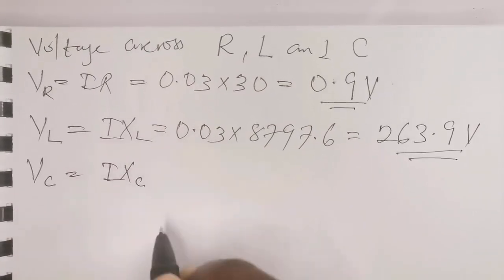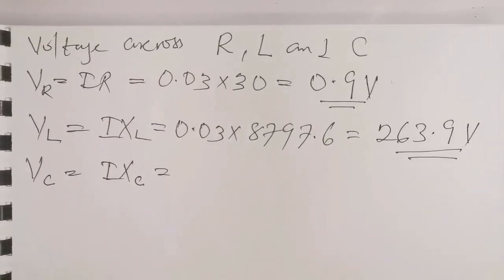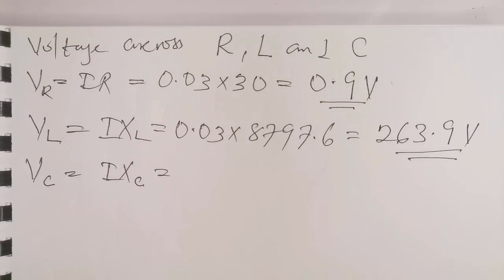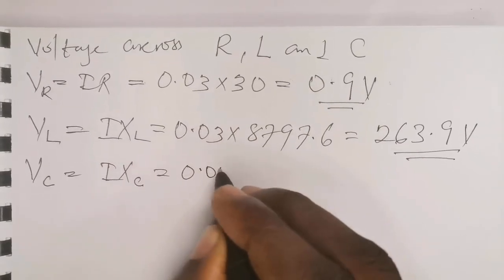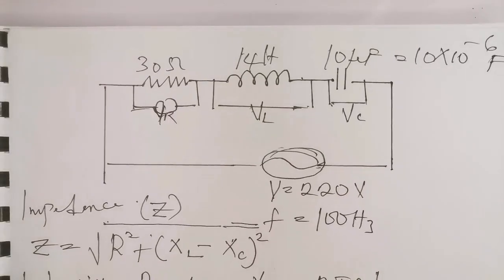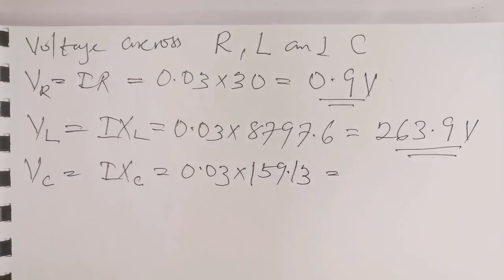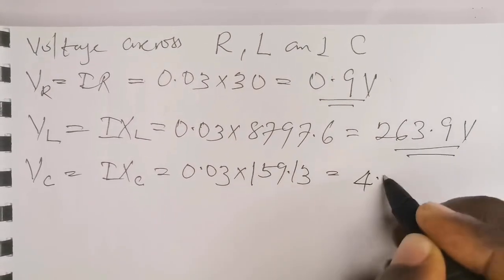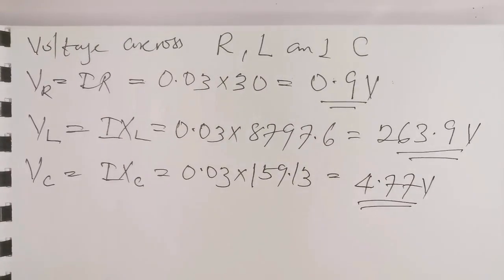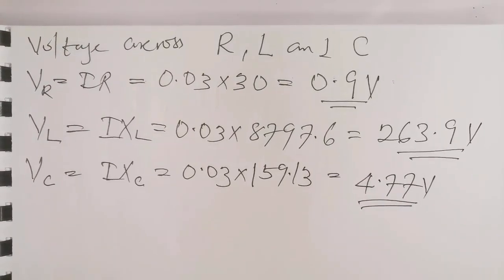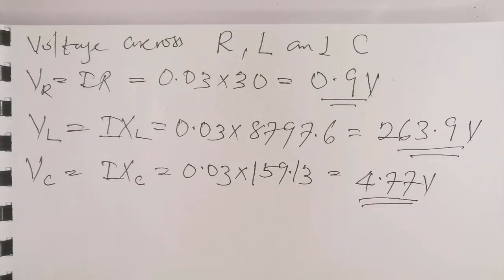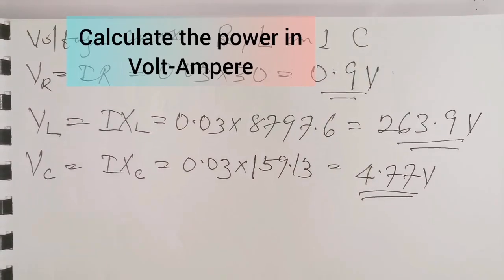The voltage across the capacitor VC is I × XC, where XC is the capacitive reactance — the resistance across the capacitor. This equals 0.03 multiplied by 159.13, giving VC = 4.77 volts. These are the voltages across the resistor (0.9 V), the inductor (263.9 V), and the capacitor (4.77 V).